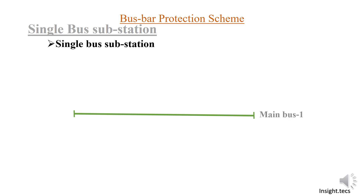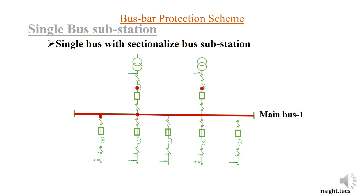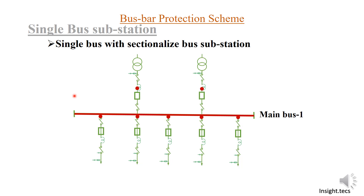In a single bus substation scheme, as you can see in single line diagram form, there is the main bus, and it has two bays of transformers along with all the feeder elements. The current flow will be as follows: from the transformers the current will come to the main bus and then it will flow into the feeders one by one, depending on the load and the current carrying capacity.